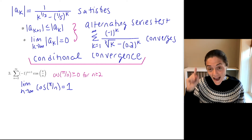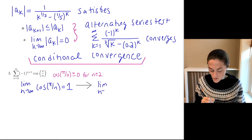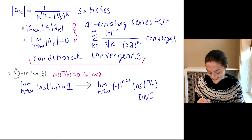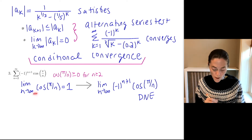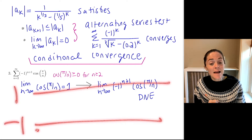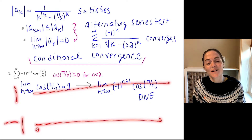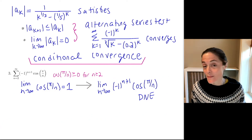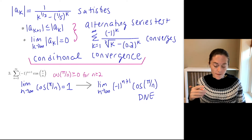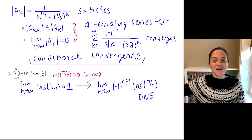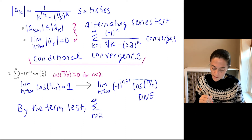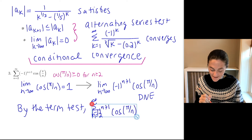If we take the limit as n goes to infinity of minus 1 to the n plus 1 times cosine pi over n, this limit does not exist because it's oscillating. The cosine pi over n approaches 1, so minus 1 to the n times cosine pi over n will be bouncing back and forth close to plus and minus 1 for large n. This limit does not exist as a finite number. The limit of the terms does not exist, so by the term test, the sum from n equals 2 to infinity of minus 1 to the n plus 1 times cosine pi over n diverges.